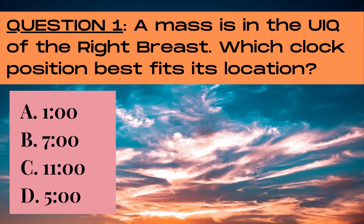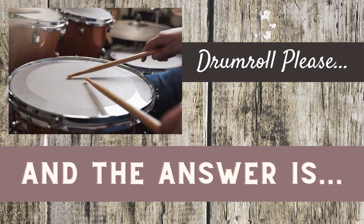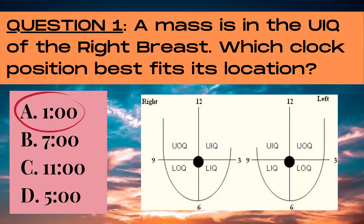Question 1. A mass is in the upper inner quadrant of the right breast. Which clock position best fits its location? A is 1 o'clock, B is 7 o'clock, C is 11 o'clock, or D is 5 o'clock? The answer is A, 1 o'clock. For the quadrants method of breast ultrasound annotation, the breast is split into four equal segments: the upper outer quadrant, the upper inner quadrant, the lower outer quadrant, and the lower inner quadrant. In the right breast, 1 o'clock position is in the upper inner quadrant.